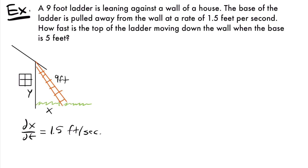An important note: if the ladder were being pushed toward the wall instead of pulled away, dx/dt would be negative 1.5 because the distance x would be decreasing. The problem won't explicitly say it's negative — you need to pay attention to the direction of change. In this case the distance is increasing, so we keep it as positive 1.5 feet per second.